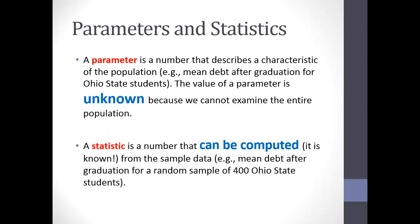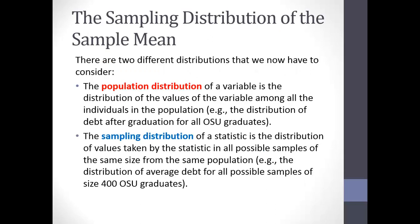A parameter is a number we don't know because we don't talk to everybody in our population. Corresponding to that is what's called a statistic. A statistic is something we can compute from our sample — for example, the average height or the proportion who are freshmen. The statistic is what we actually calculate from our sample. This leads us to the idea of two different things: the population distribution, which would include all individual values — say, every person's debt after graduation at Ohio State.